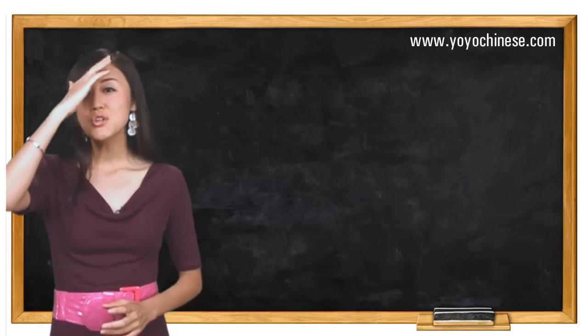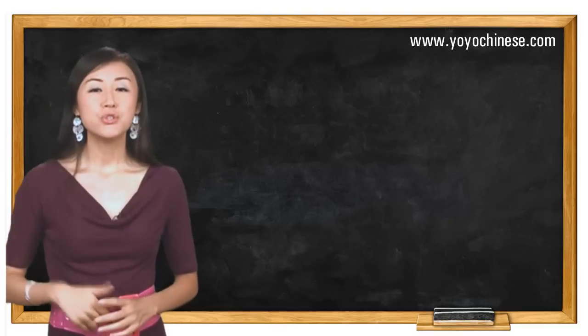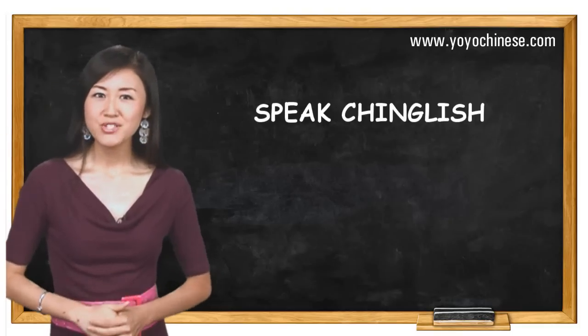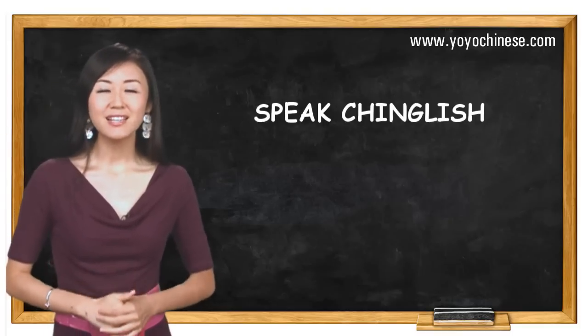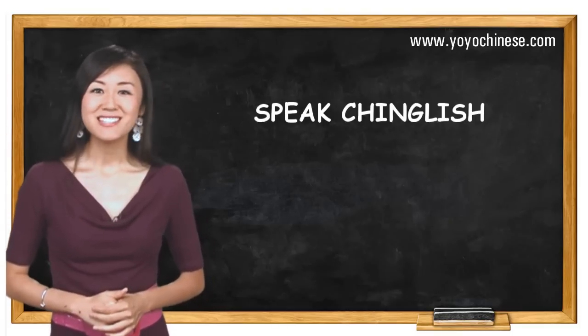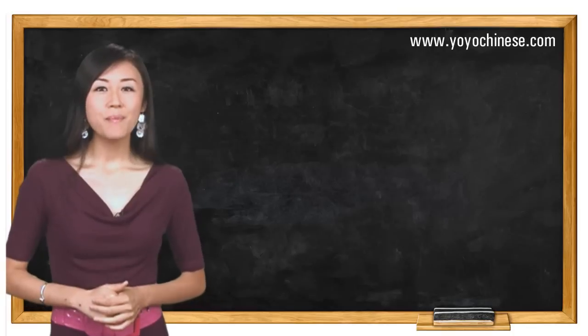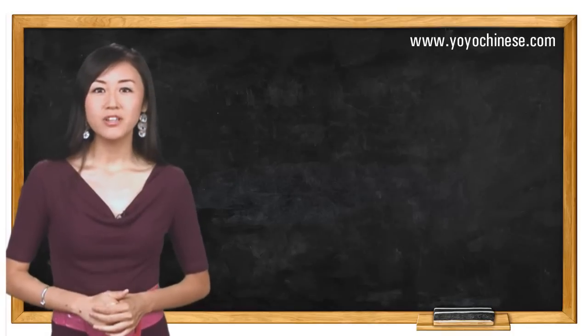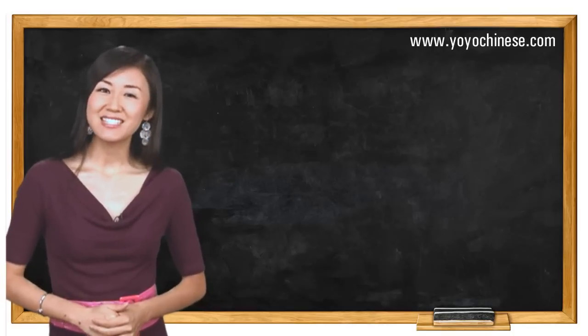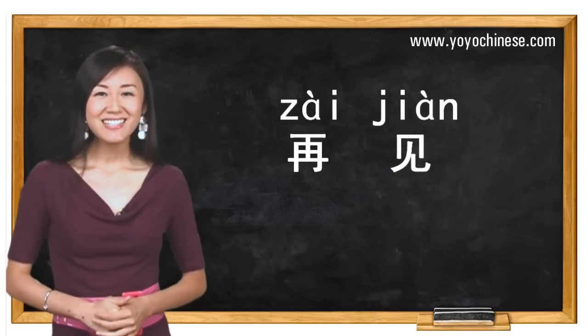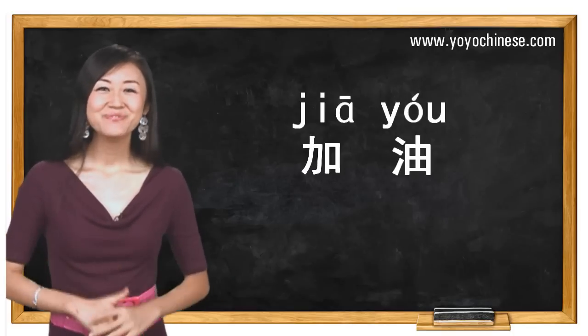If you do what I asked you to do, you will very soon start to think like a Chinese, and maybe dream in Chinese. We will talk more about Chinese word order in our next lesson. Zaijian, jiā yóu!